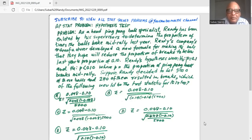As a head ping pong ball specialist, Randy has been enlisted by his superiors to determine the proportion of times the balls break midly last year. Randy's company's manufacturer developed a new formula for making the ball that they hope will reduce the proportion of breaks to below last year's proportion of 0.10.